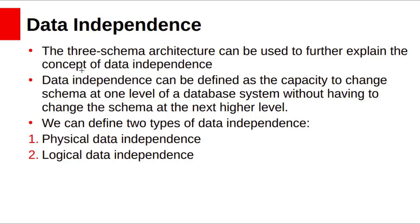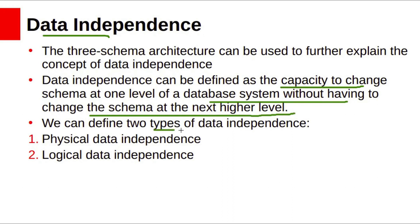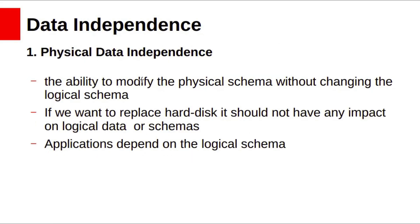Three schema architecture can be used to explain the concept of data independence. Data independence means the capacity to change the schema at one level of the database system without having to change the schema at the next higher level. There are two types: physical data independence and logical data independence. Physical data independence is the ability to modify the physical schema without changing the logical schema. Modifications at the physical level are occasionally necessary to improve database performance — for example, replacing the hard disk should not have any impact on the logical data or schema.